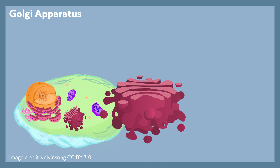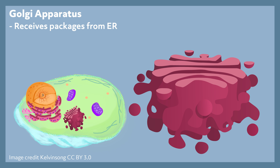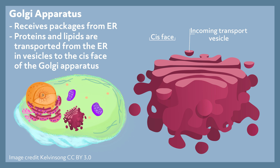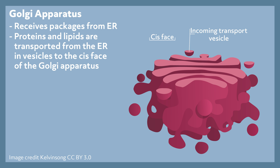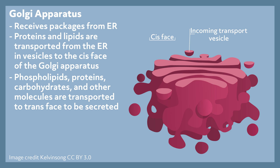Golgi apparatus. The Golgi apparatus is referred to as the shipping department of the cell. It receives packages from the endoplasmic reticulum and makes the necessary packaging additions to fully form functioning lipids and proteins. Vesicles attach to the cis face of the Golgi body and release their transported particles into it. Phospholipids, proteins, carbohydrates, and other molecules composed in the ER get transported to the Golgi body, modified as they travel to the trans face to be secreted so they are usable and functional. Basically, the Golgi apparatus receives macromolecules, makes necessary modifications, and labels them so they get where they need to go.